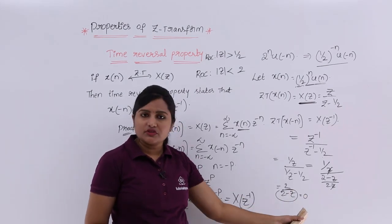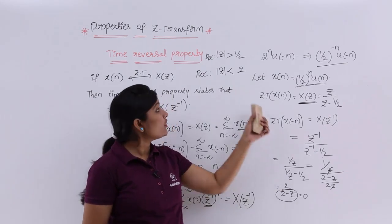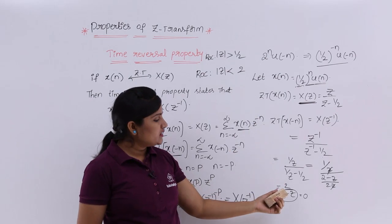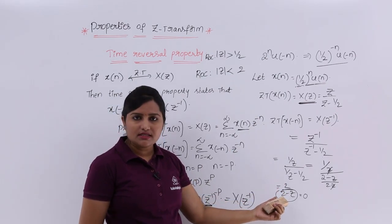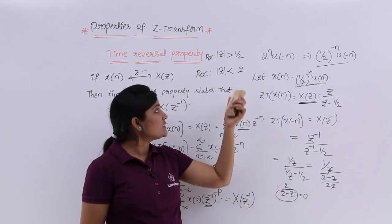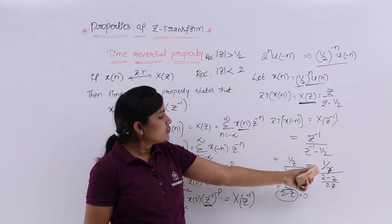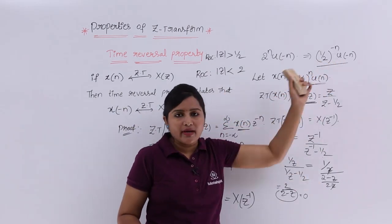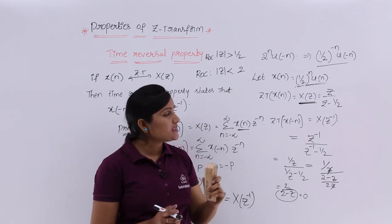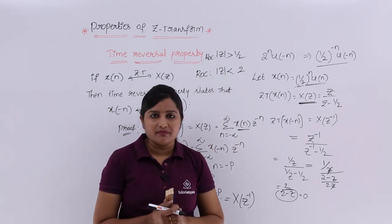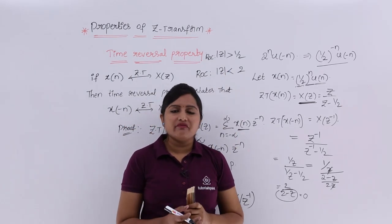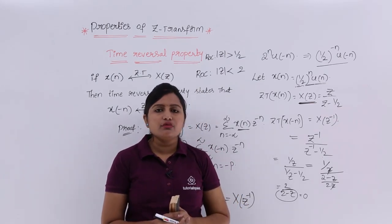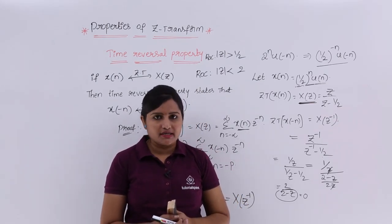After getting the Z-transform of the sequence, it is easy to find the region of convergence. For a left-sided signal having U(-n), the ROC is |Z| less than the pole value. Because of that U(-n), we get the less-than condition. This covers the time reversal property and its application to Z-transform problems.